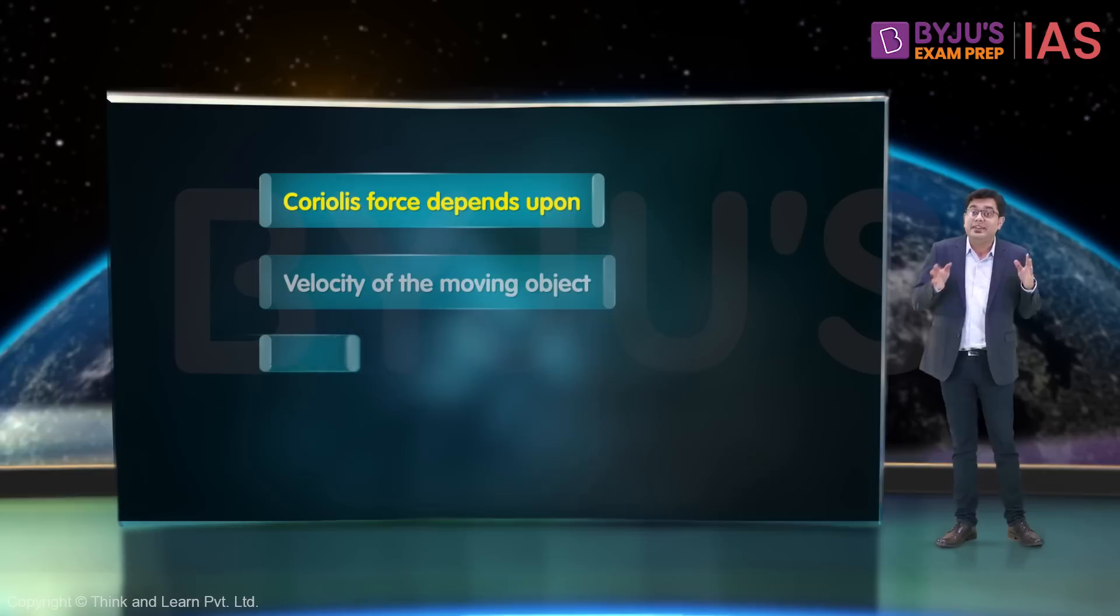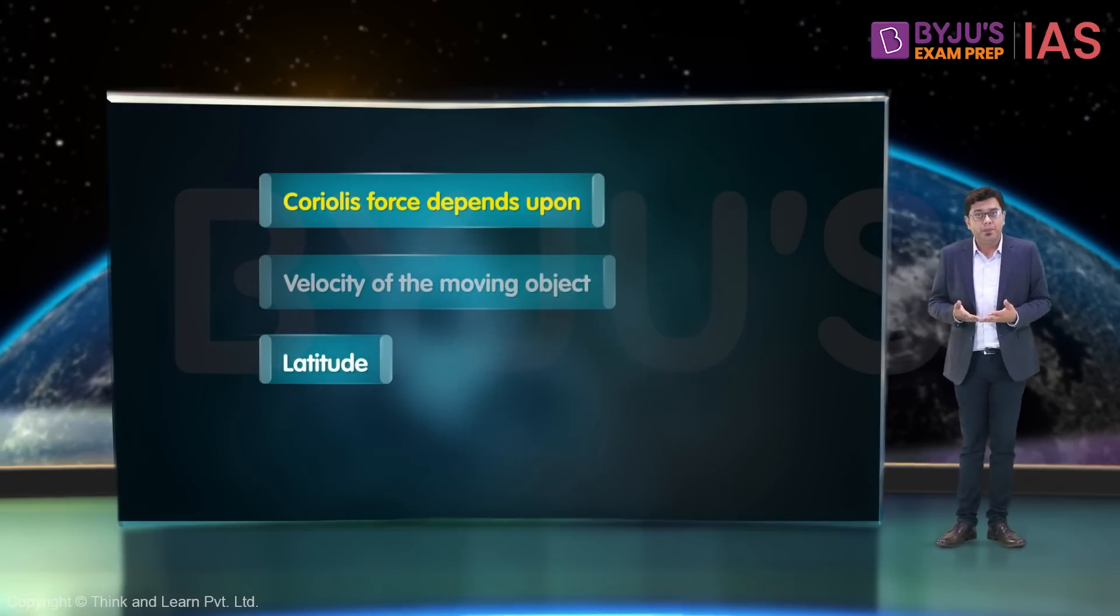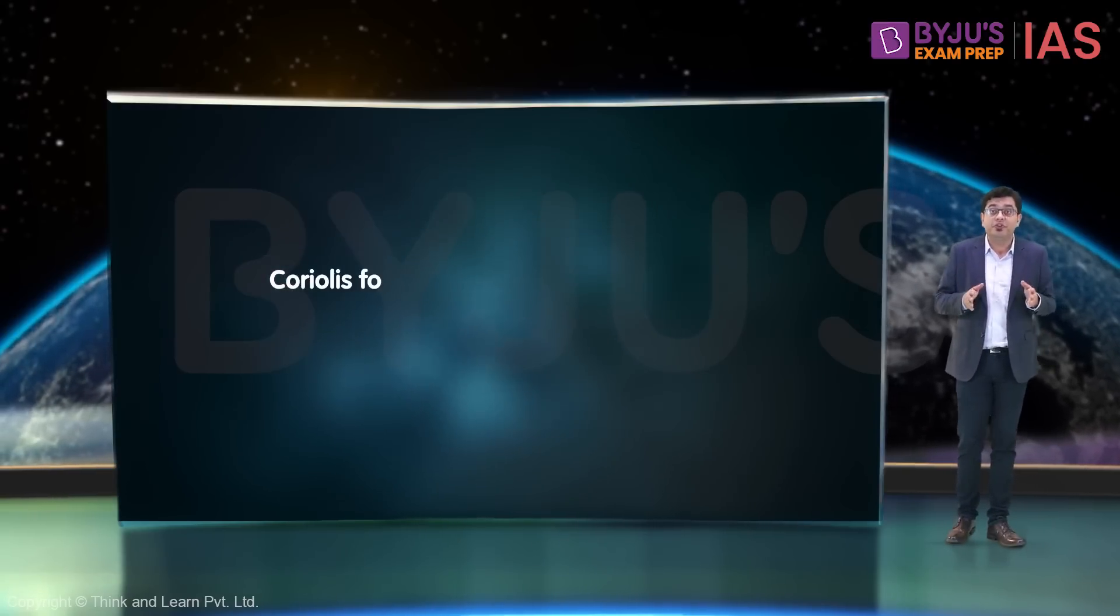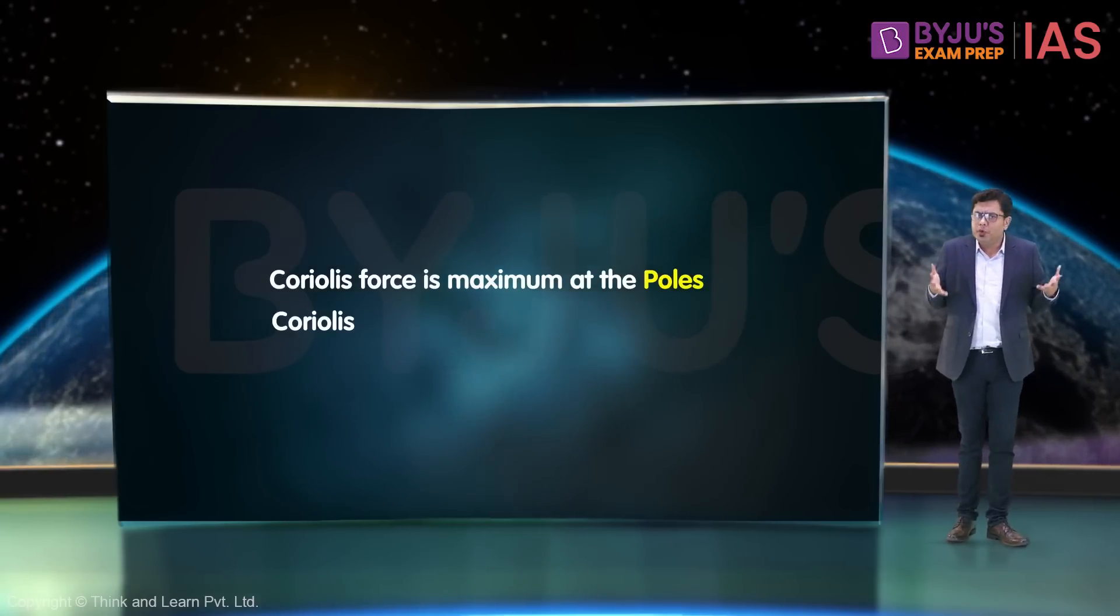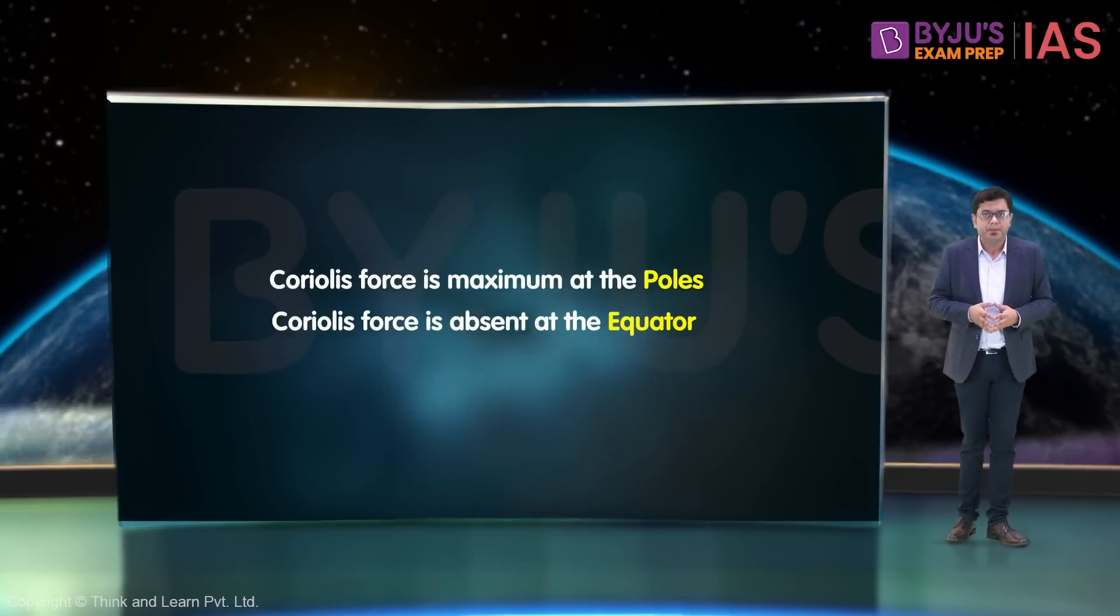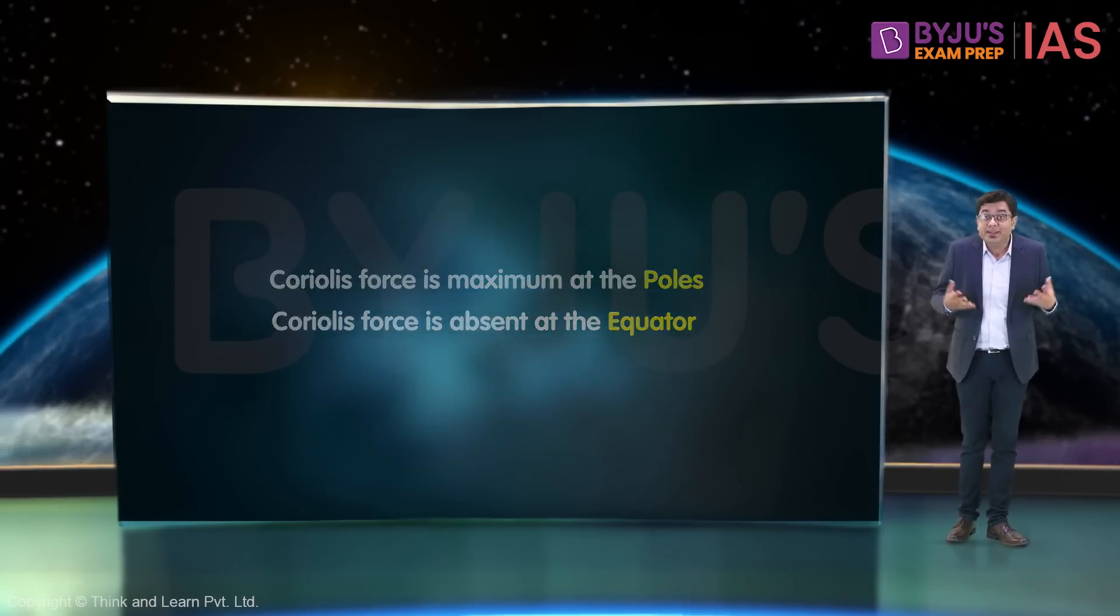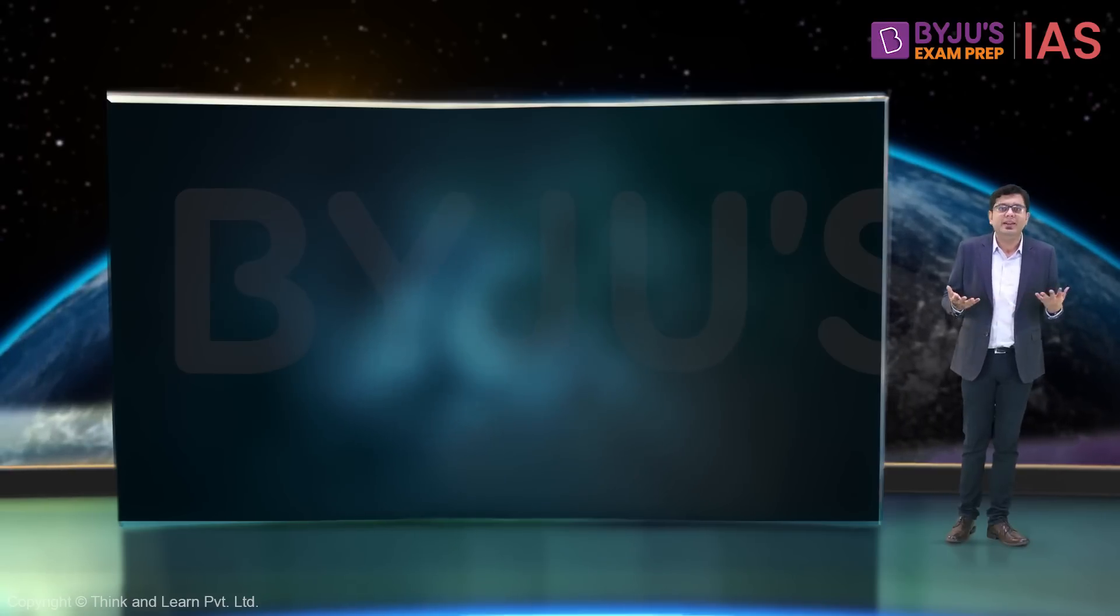Secondly, it depends on the latitude. Coriolis force is maximum at the poles and is almost absent at the equator. And why is it like this? Well, let's understand.